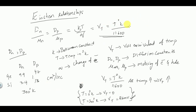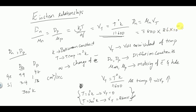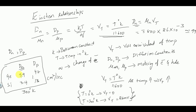We can calculate diffusion constants using Dₙ = μₙ × Vt. At T = 300 K, Vt = 26 mV = 26×10⁻³ V. For germanium, μₙ = 3800 cm²/V·s, so Dₙ = 3800 × 26×10⁻³ ≈ 99 cm²/s. This is how Dₙ and Dₚ values are derived.